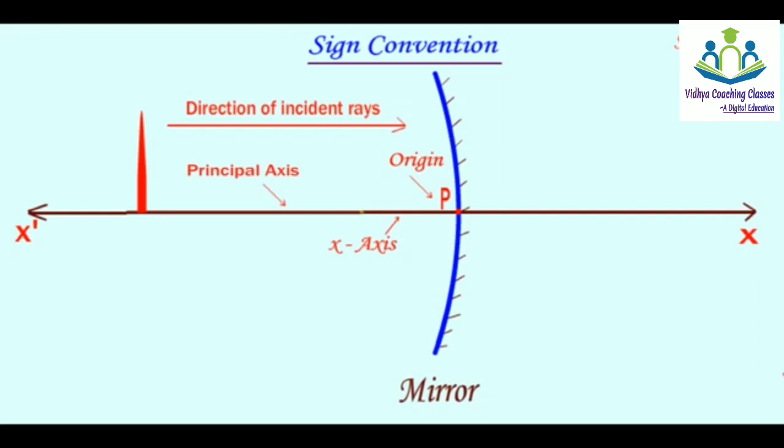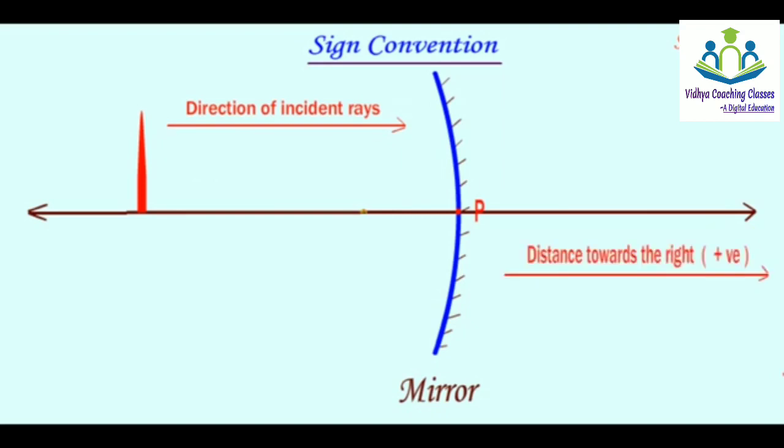The direction of incident rays will originate from the pole P. If we direct from the pole towards the right, we take the distance towards the right, it will always be calculated in positive terms. If we take the distance from pole to 4 km, it will be positive.